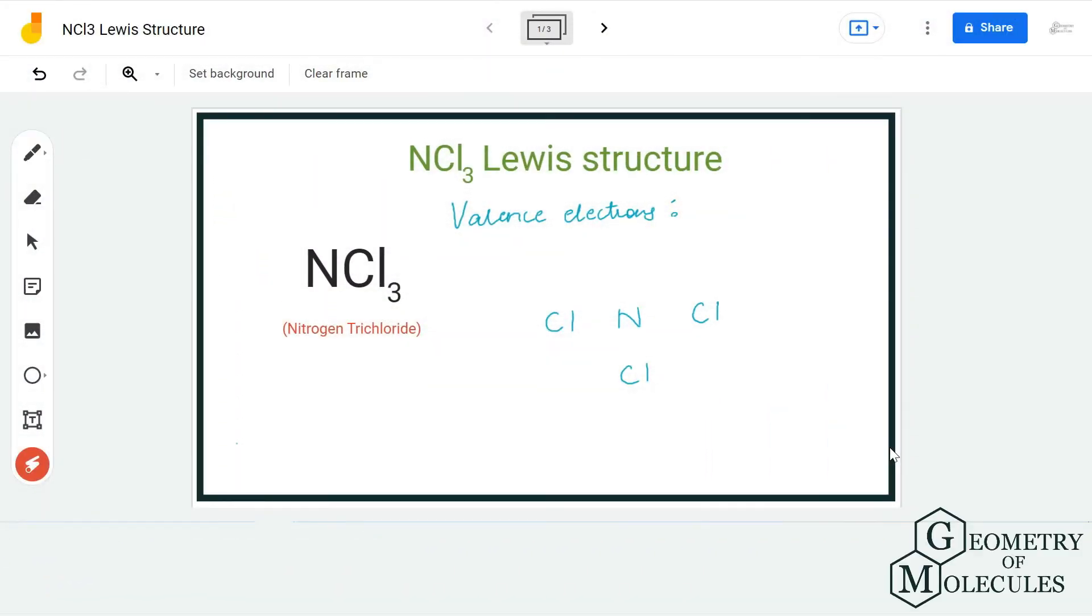Hi guys, welcome back to our channel. In today's video, we are going to help determine the Lewis structure for NCl3 molecule. It's a chemical formula for nitrogen trichloride, and to find out its Lewis structure I'm going to share the total number of valence electrons for this molecule first.